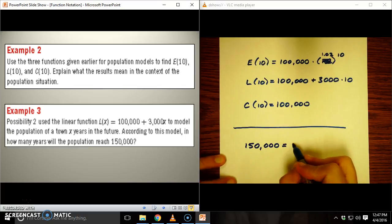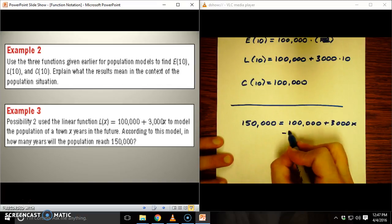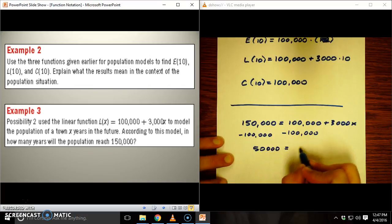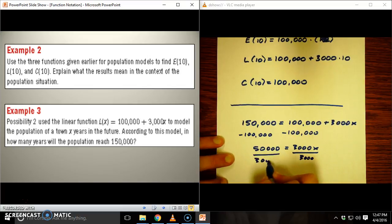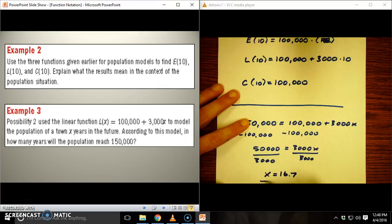And so I would be solving this. I would solve that by taking away 100,000 from both sides. So I'd have 50,000 equals 3,000x. Divide by 3,000, and the result is about 16.7.